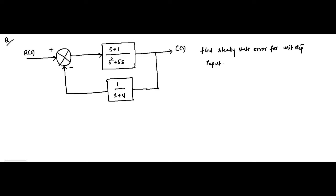Hello friends, welcome to Engineering Tutorial. Here we are with another question on error analysis of non-unity feedback systems. We are given a system in block diagram representation format and we have to find out the steady state error when it is subjected to a unit step input. H(s) is a non-unity feedback system.